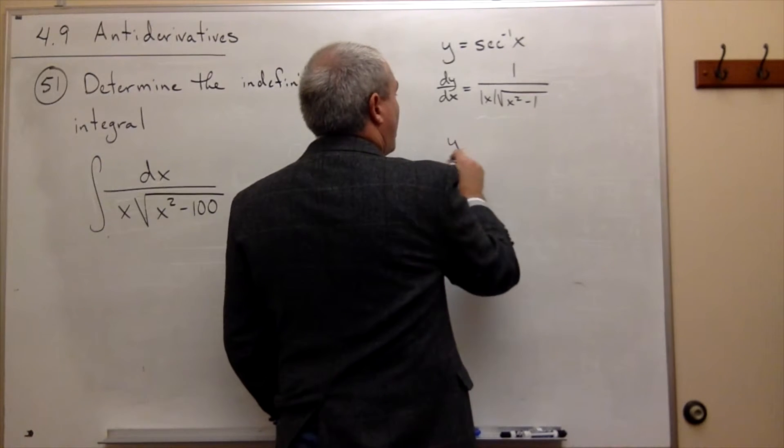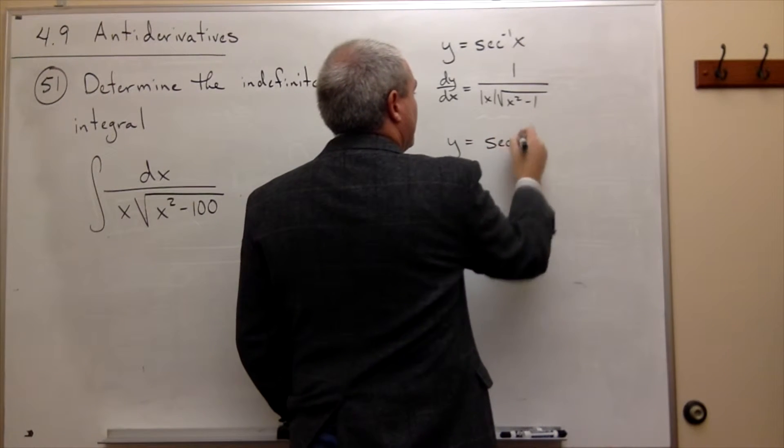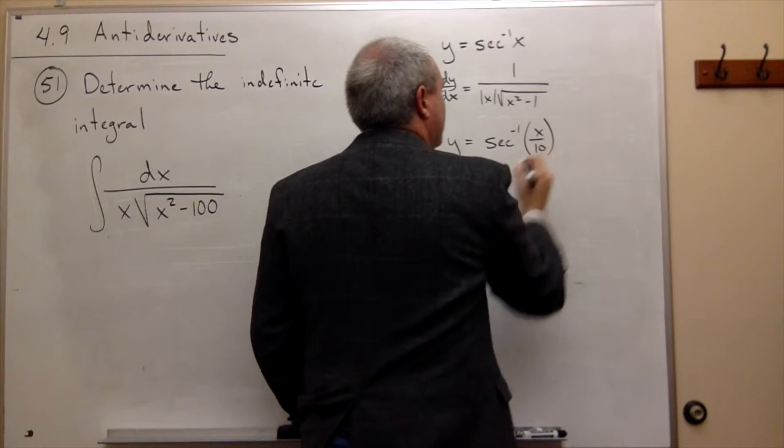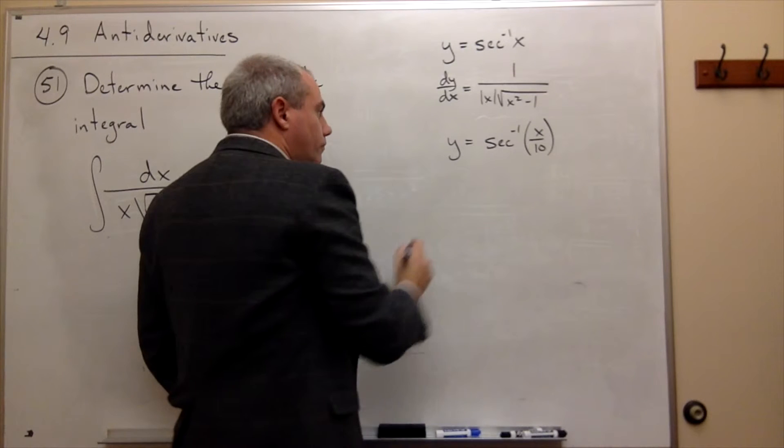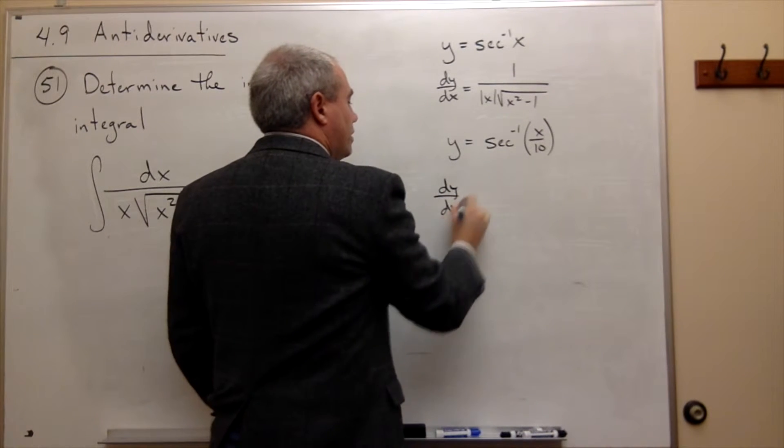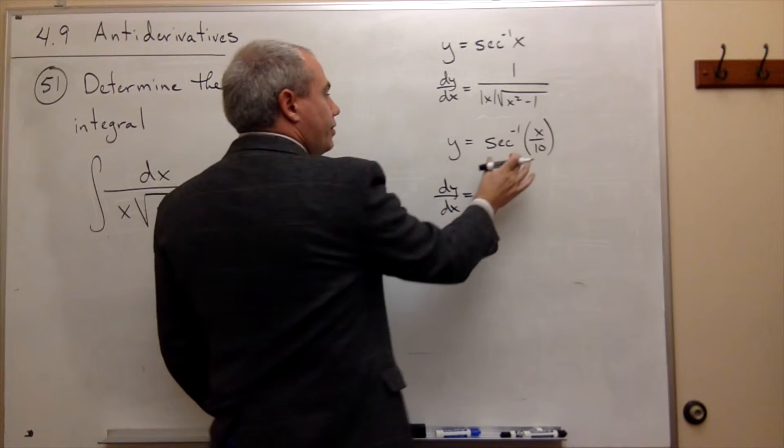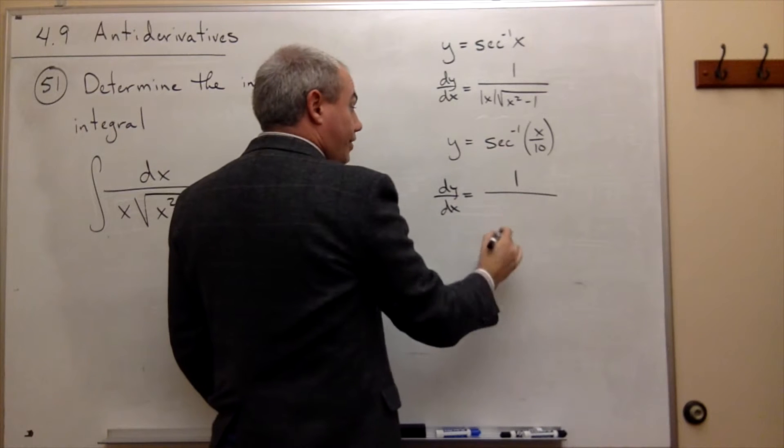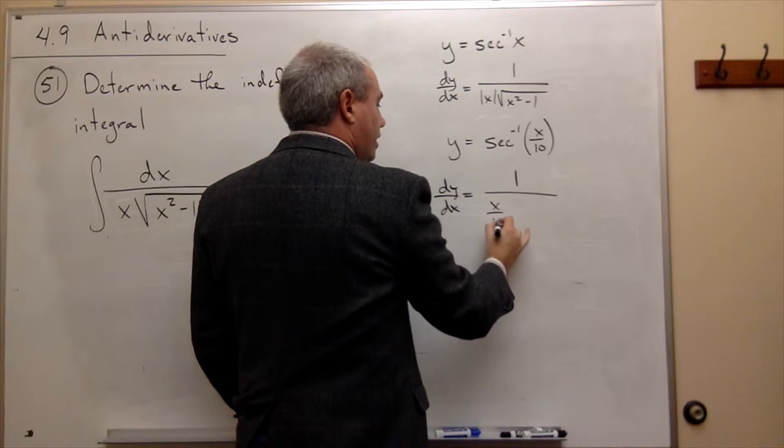So, what if I have y equals secant inverse of x over 10? Let's see what would happen. Then I get that dy/dx equals, well, the derivative of secant inverse of something is 1 over that thing, x over 10.